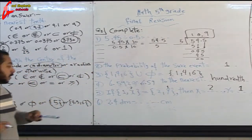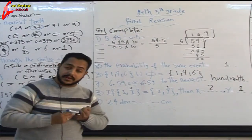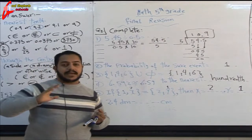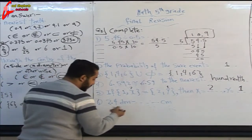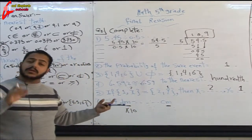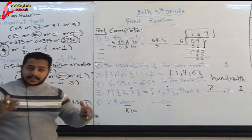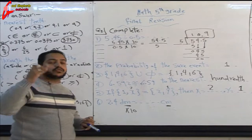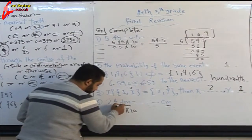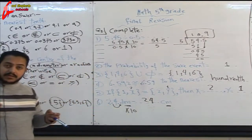Question six complete: 2.4 decimeters equals how many centimeters? To convert from decimeters to centimeters, multiply by 10. 2.4 times 10 — we move the decimal point one place to the right — equals 24 centimeters.